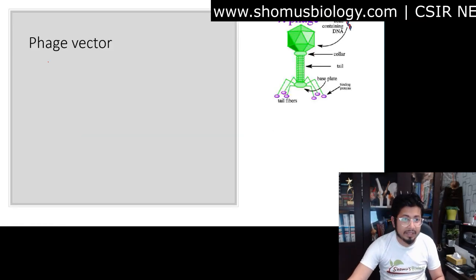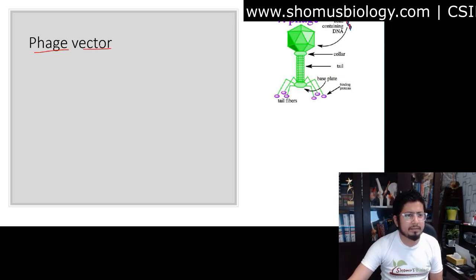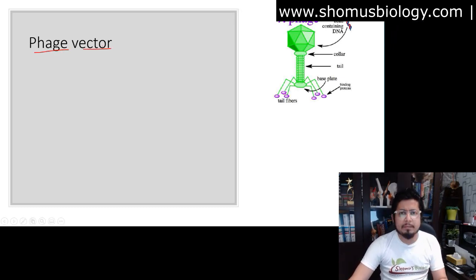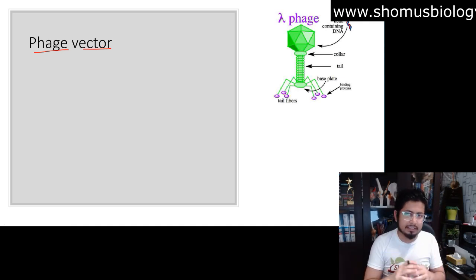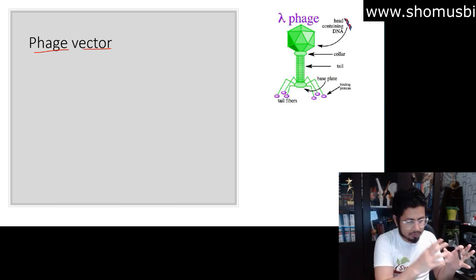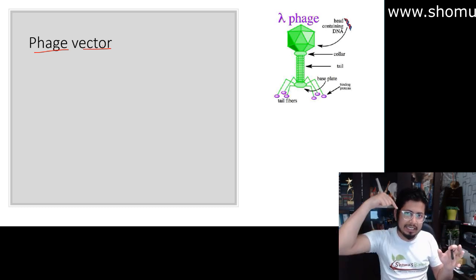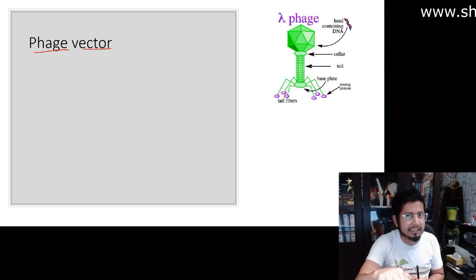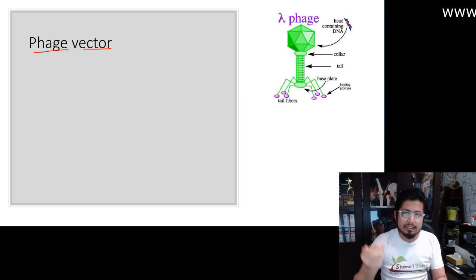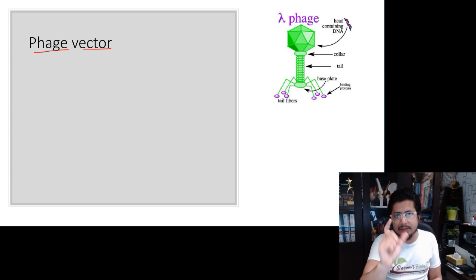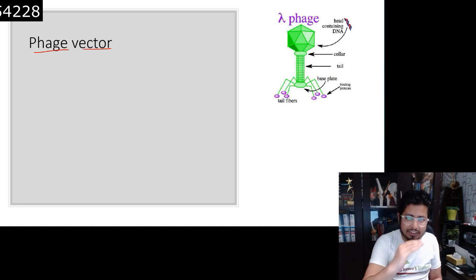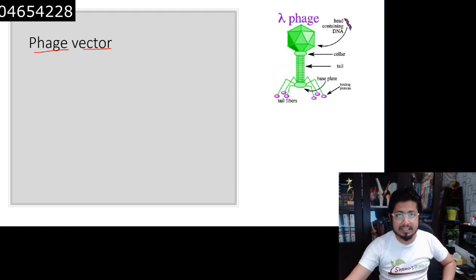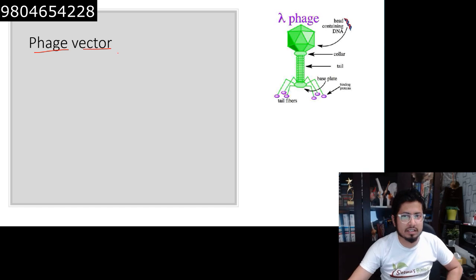The use of bacteriophage as a vector means we are using bacteriophage because the phage itself can infect bacteria. The vector phage is a virus — it can attack bacteria, and when it does, it can deliver its own genetic content, that is DNA, inside the bacterial cell. During that process, we can transfer our target DNA or gene of interest inside the bacterial cell with the help of the phage. So phage naturally works as a delivery system — a natural delivery system for bacterial transformation events.